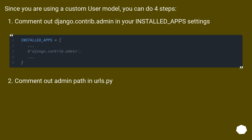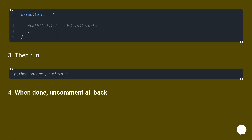Since you are using a custom user model, you can follow these steps: comment out django.contrib.admin in your INSTALLED_APPS settings, comment out the admin path in urls.py, then run migrations. When done, uncomment everything back.